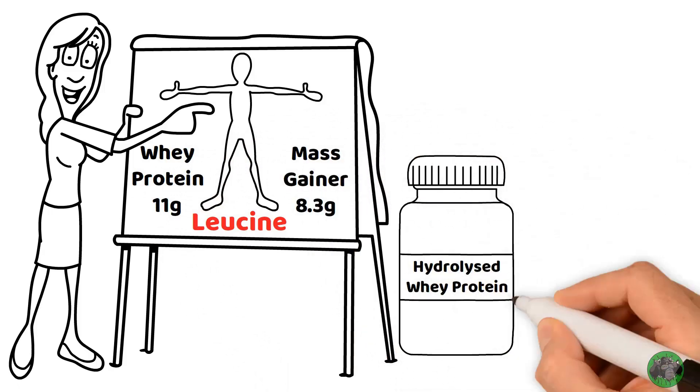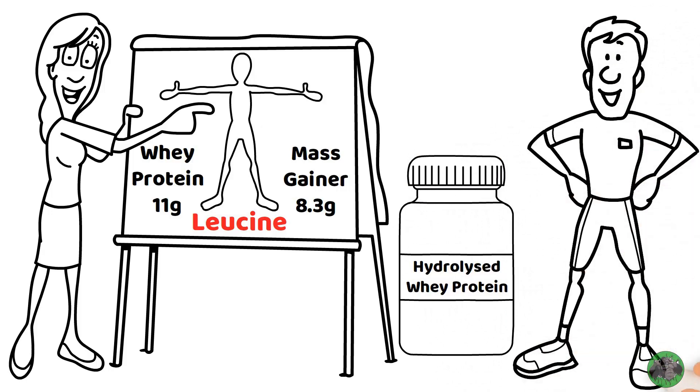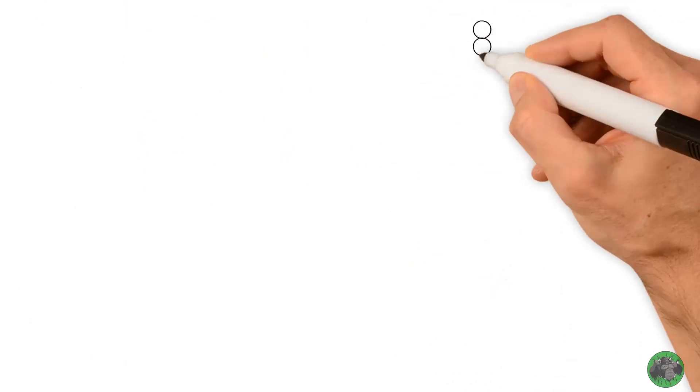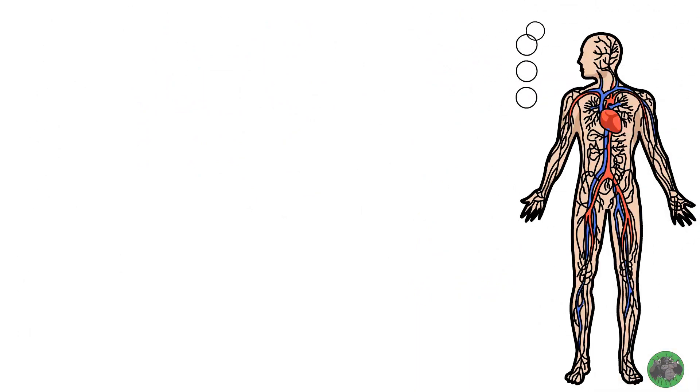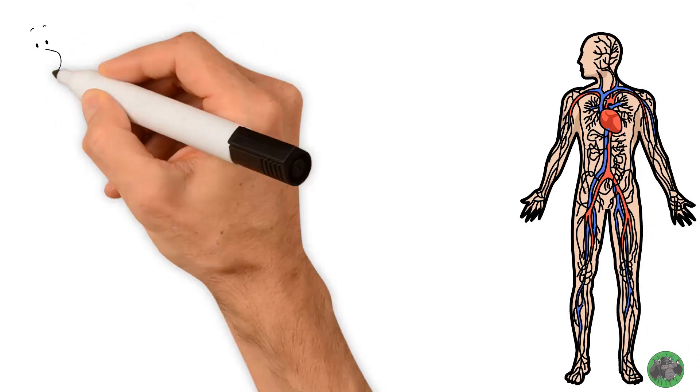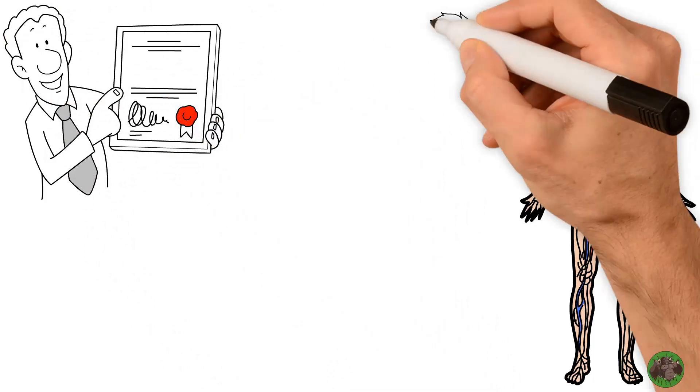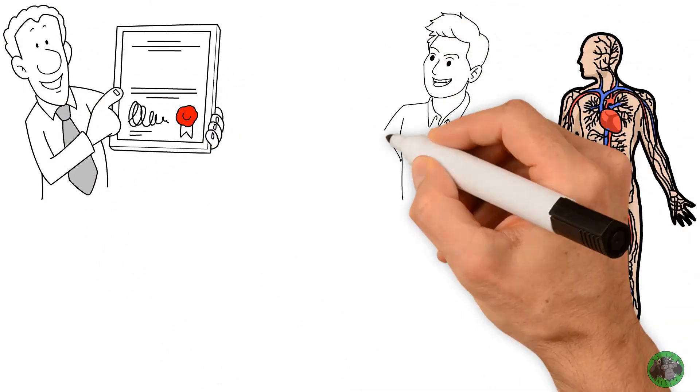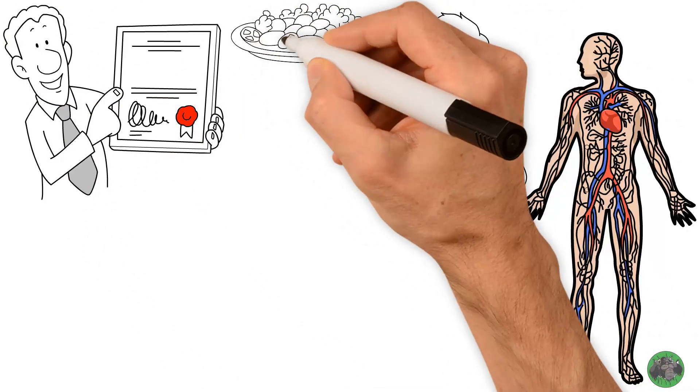Hydrolyzed whey protein is better for maintaining a lean physique because it has no carbs and fat. The protein is pre-broken down in production before consumption, making it easier to be absorbed by the body and preventing allergic reactions. It is the highest degree of protein purification, has no lactose, and helps with carb-restricted diets.